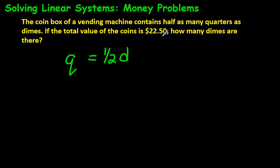If the total value of the coins, so this is the number of coins right here. Over here is the number of coins, and over here will be actual money, like what they're worth. Now, a quarter is worth 25 cents, for those that don't know, and a dime is worth 10 cents. So let's think about that. If the total value of the coins is $22.50, how many dimes are there?